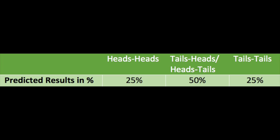In this experiment we will explain the probability of getting the different combinations when flipping two coins. As you can see, the probability of getting heads-heads or tails-tails is 25% each, and the probability of getting heads-tails or tails-heads is 50%. This gives us a ratio of 1 to 2 to 1.